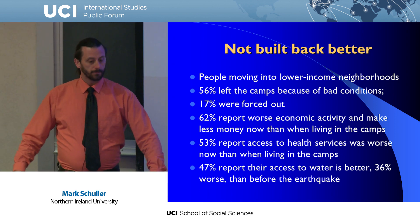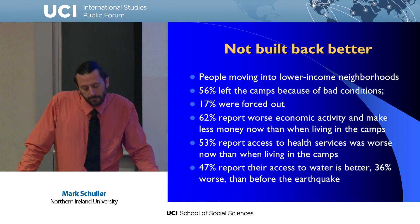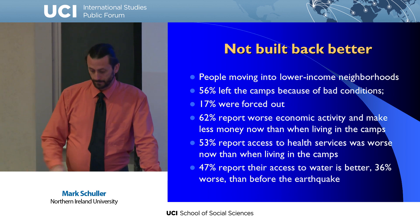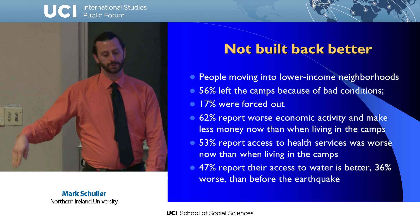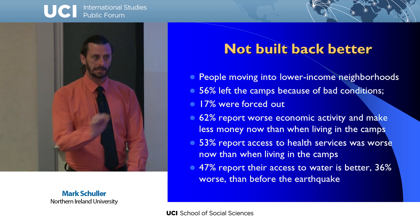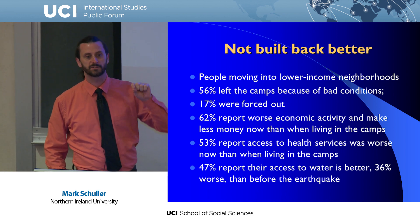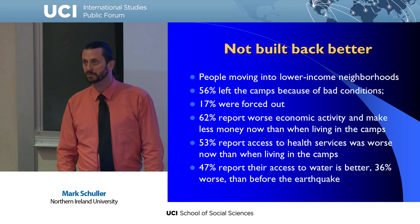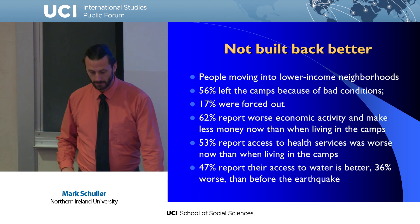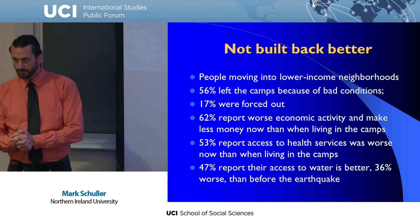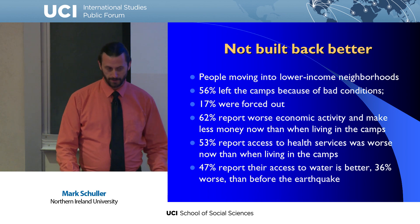62% of people report worse economic activity and make less money now than when they lived in the camps. 53% report access to healthcare was worse than when living in the camps. At least when you had an IDP card, there was some semblance of foreign responsibility for your well-being — after people left the camps, that all went away. 47% report their access to water was better; 36% worse since before the earthquake.